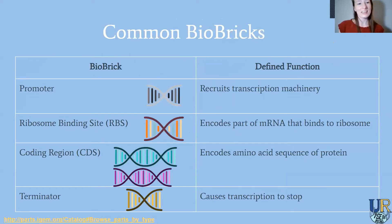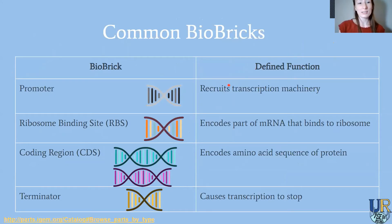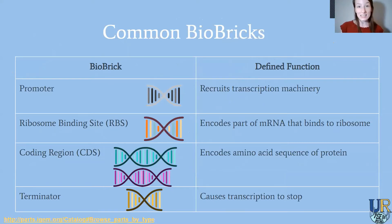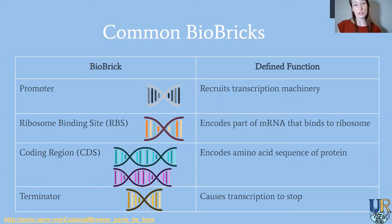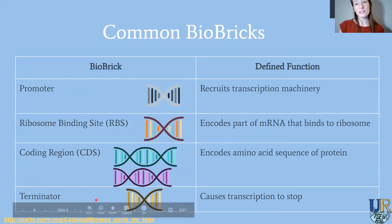So what are some common biobricks? Here are four — there are way more, but I wanted to go over the ones you'll see in the reading and in biology or synthetic biology. The first is the promoter, which recruits the transcription machinery to turn DNA into messenger RNA. We also have the ribosome binding site, which encodes the part of the mRNA that binds to the ribosome for translation. Then there's the coding region, which encodes the amino acid sequence that becomes your protein. And the terminator causes transcription to stop. Notice how each biobrick has a defined biological function — that's what makes them a biobrick.